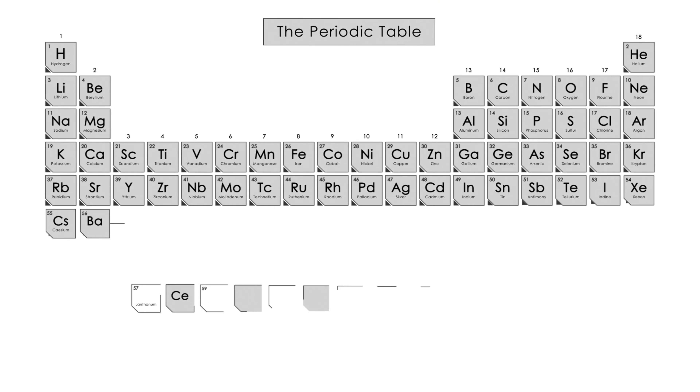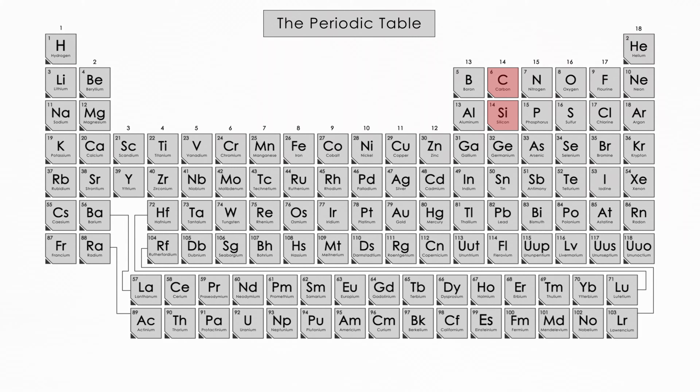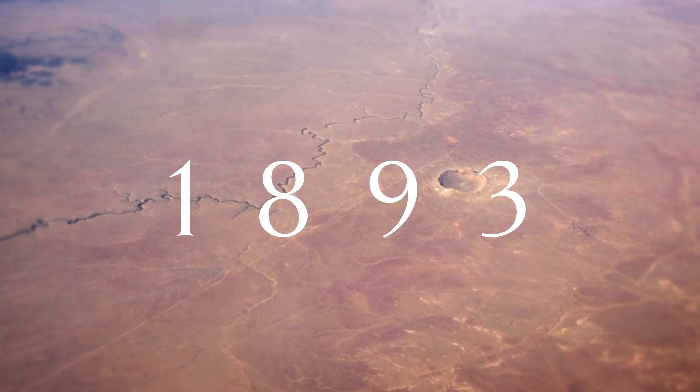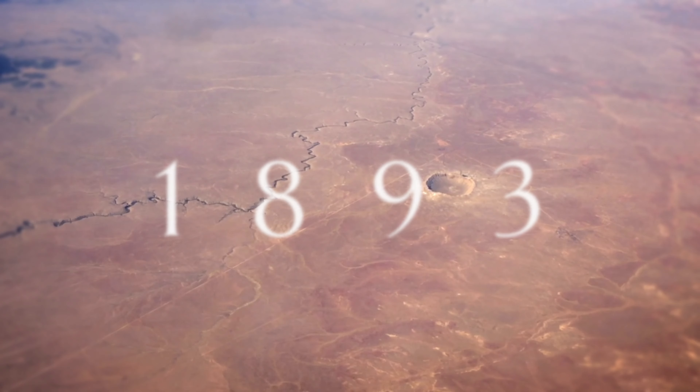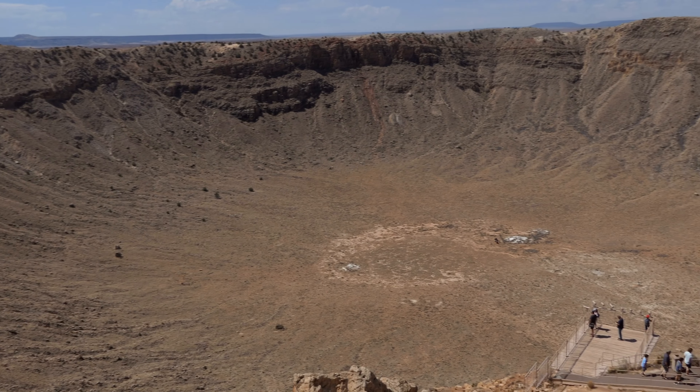Let's start with a little background. Moissanite is a rare naturally occurring mineral known as silicon carbide. It was first discovered in 1893 at the site of a massive meteorite strike in Arizona, but is now produced in laboratories in controlled environments, making them man-made gemstones.